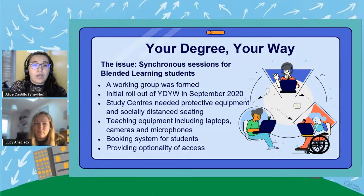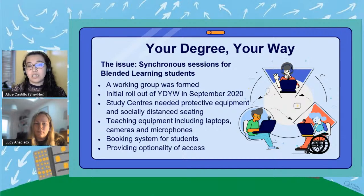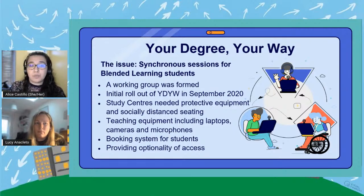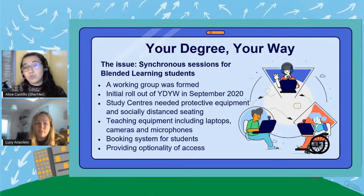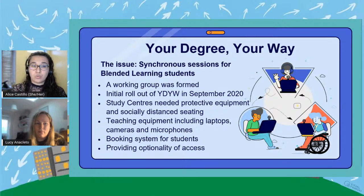So how did we start? We put together a working group formed in June 2020 to look at how to take teaching forward during lockdown for blended learning students who are required to attend face-to-face classes coupled with asynchronous content and activities. The initial rollout of Your Degree Your Way took place in September 2020, so we had between June and September to get things into place, and whilst that was happening students attended online sessions only. As a working group we had to think about the safety of staff and students as well as the room setup. All of our study centre rooms were fitted with cameras controlled by remote controls and sure microphones to enhance sound quality.